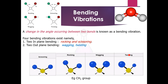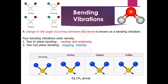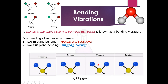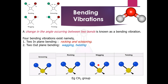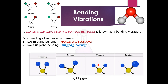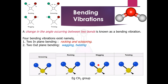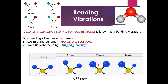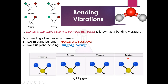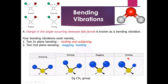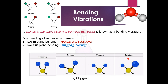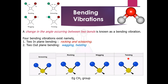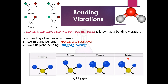In wagging, both bonds are coming towards you or going away from you — outside the plane, above and below. In twisting, one bond is coming above the plane and the other is going below the plane. This is called twisting.